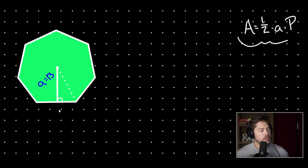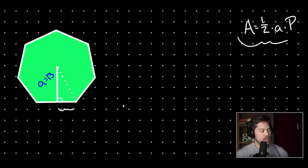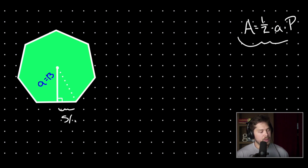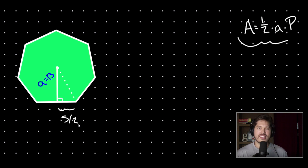We want to find this piece of our right triangle. This piece is our side length divided by two — it's half the length of our side. We know that because our apothem bisects our side length.